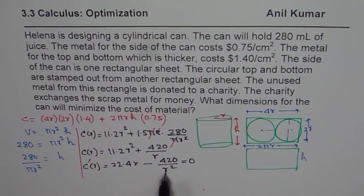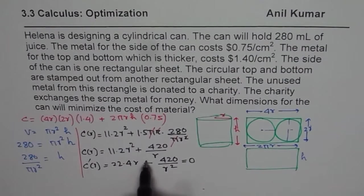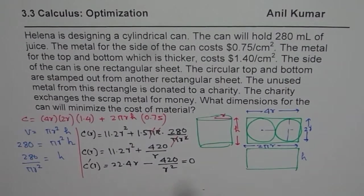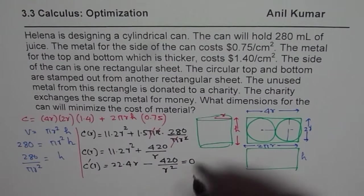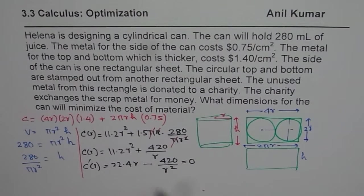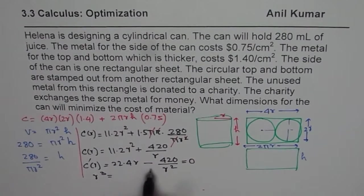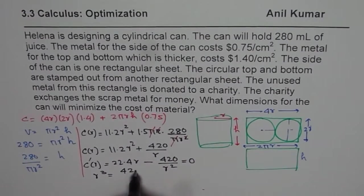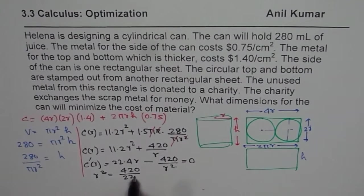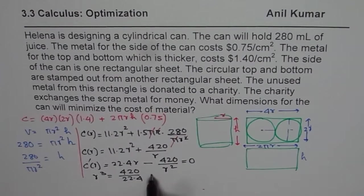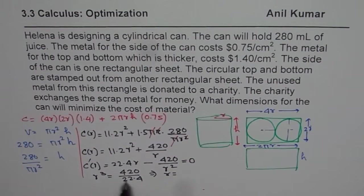So when you equate this, then that means, and you solve, so this is equal to this. So R cubed, so when you solve this, what you get here is, let me write down here, so R cubed, when you cross multiply, will be equals to 420 divided by 22.4.